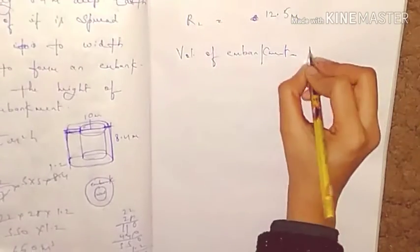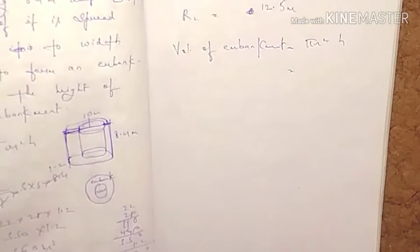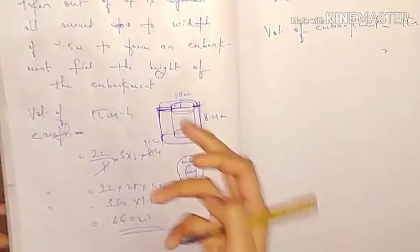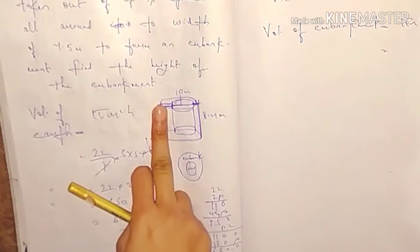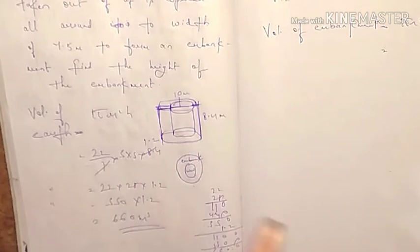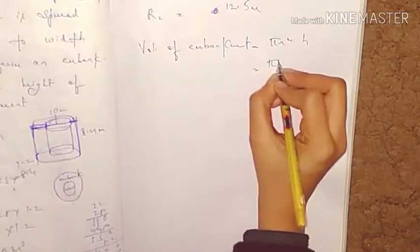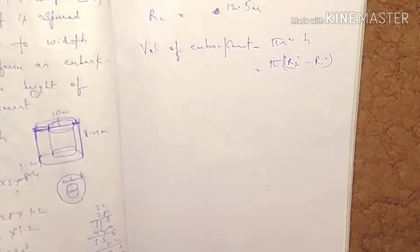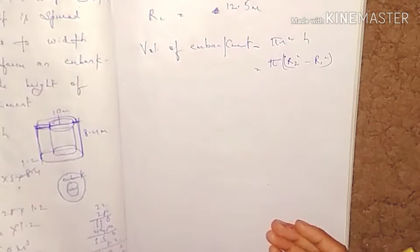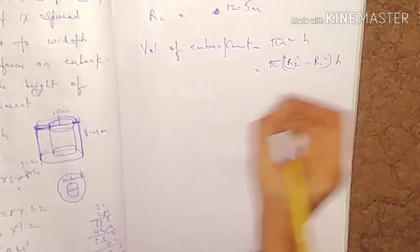The volume of the embankment is equal to pi r squared h. Since we have both external and internal radius, we use the hollow cylinder formula: pi times (r2 squared minus r1 squared) times h. We have the external radius and internal radius, so it is pi times (r2² - r1²) times h.